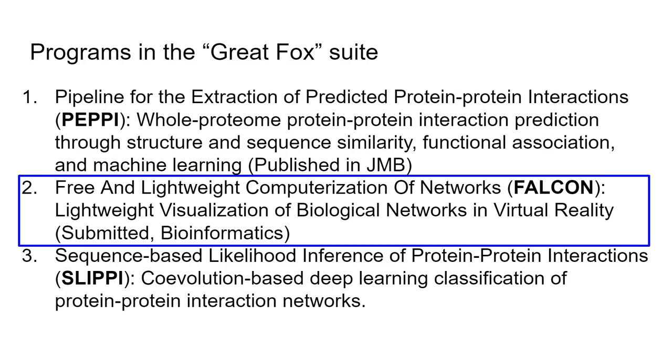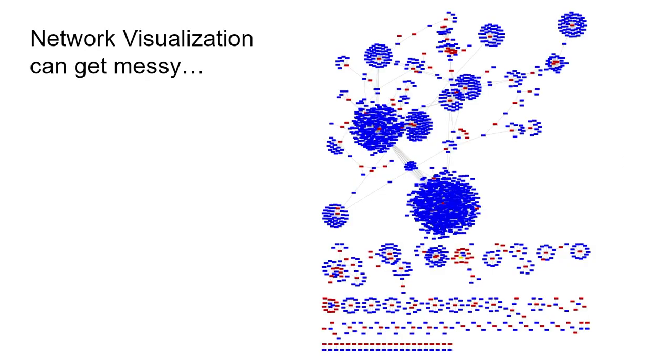Next, I'll briefly discuss the network visualization program for virtual reality. We needed this because 2D network visualization gets messy. This is an E. coli-human dataset I predicted through collaboration. You can see giant hairballs making it hard to look at. Hubs get lost in those hairballs.